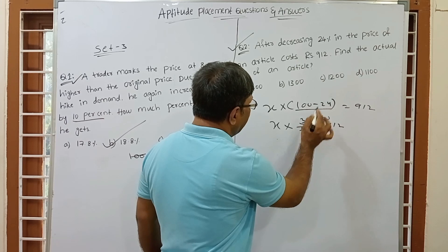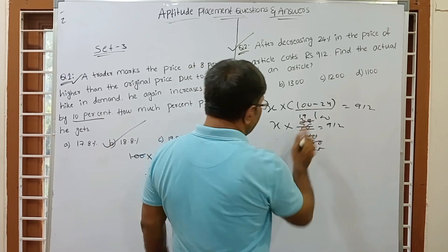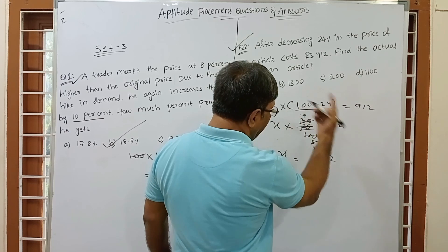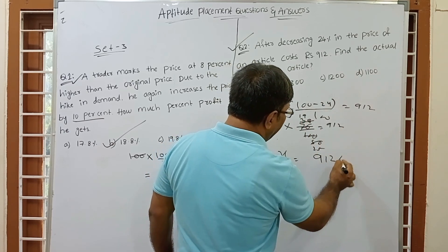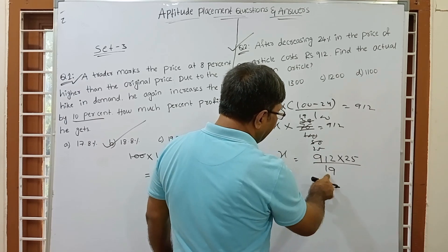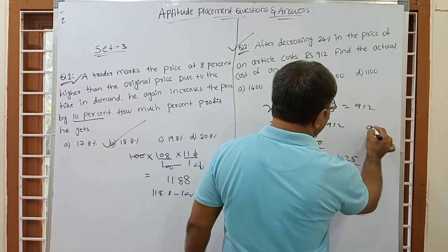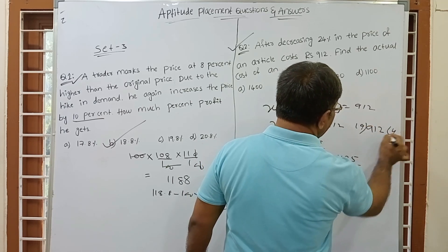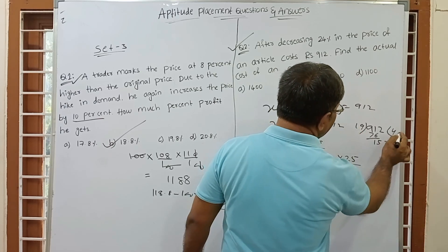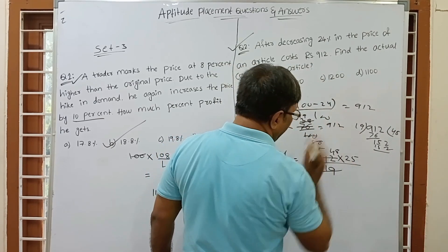Solving the equation: x = (9/2) × (100/76). Simplify 100/76 — divide both by 4 to get 25/19. So x = (9 × 25) / (2 × 19) = 225/38. Further simplifying: 9/2 × 25/19 gives x = 48 × 25 divided by 19 × ... working through, x = 48.